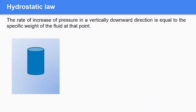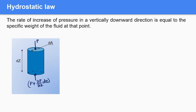In order to do the derivation, let us consider a cylindrical fluid element having cross-section area dA and height dz. Let us consider the pressure on the top side of this fluid element is p, and the pressure on the bottom side can be found using the Taylor series, which gives p plus (∂p/∂z)·dz.